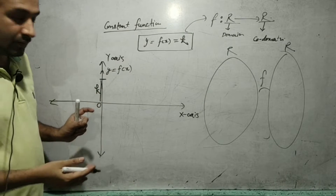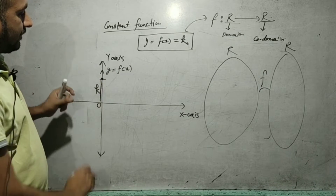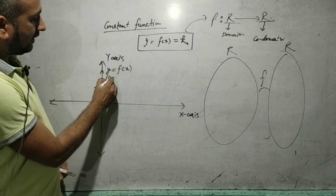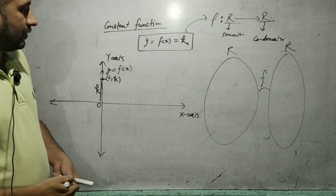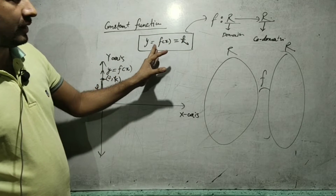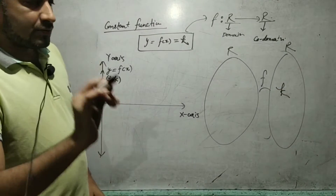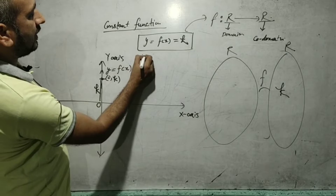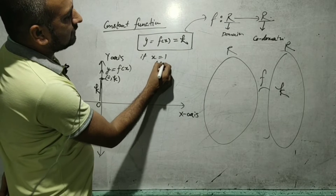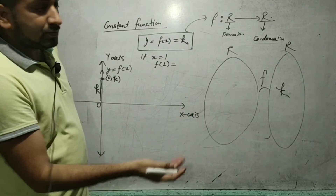The origin is from where we mark the distance. There is a point, and the coordinates of this point are (0, k). In our function, y = k. Now, if x = 1, then f(1) will also be k — there is no change; it will also be k.